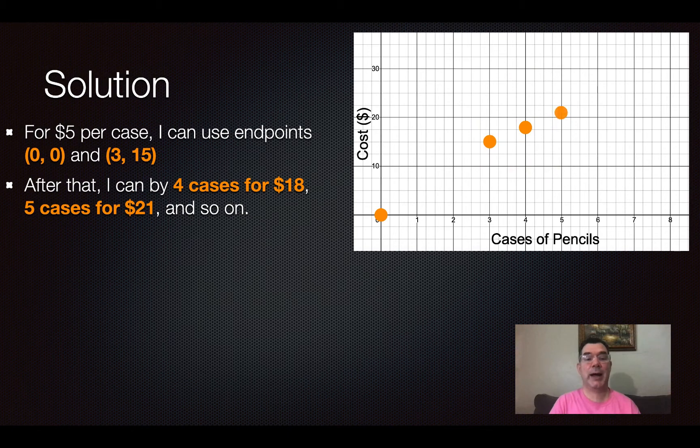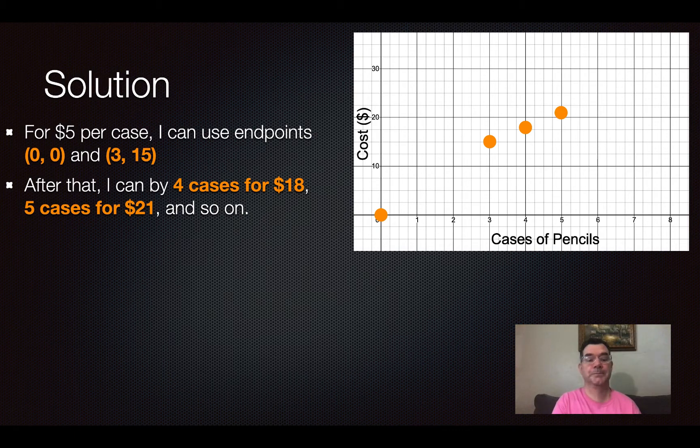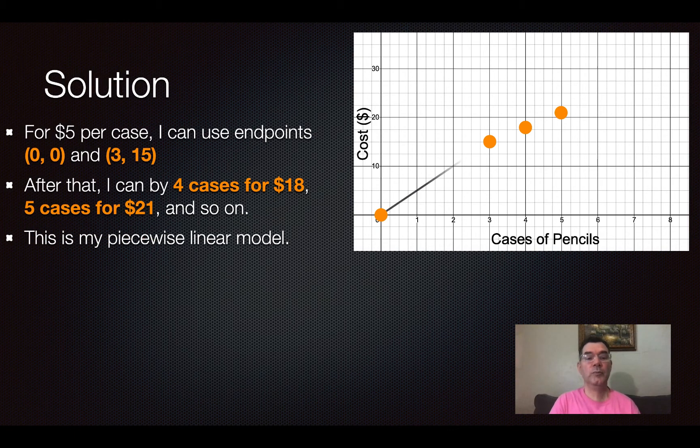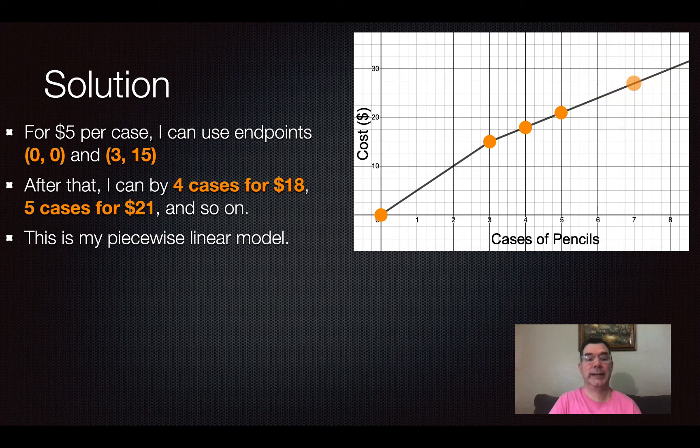After that, I can buy 4 cases for $18, 5 cases for $21 and so on. So there's my piecewise linear model right there.